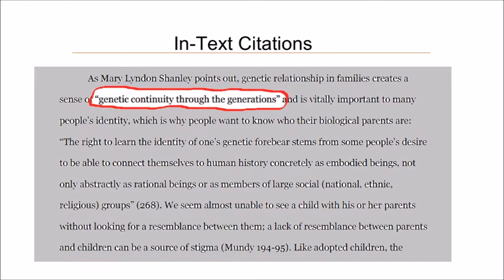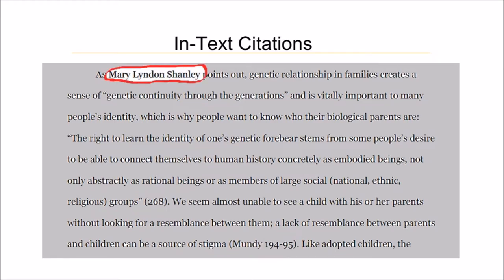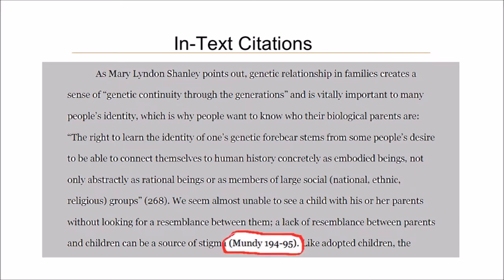If you're copying someone's exact words, you'll put their words in quotation marks. If there's extra information that would help the reader find the fact, idea, or quote — like a page number — then add that in parentheses right after the fact or idea. You can either give the author's name right in your paper or add it to the note in parentheses.